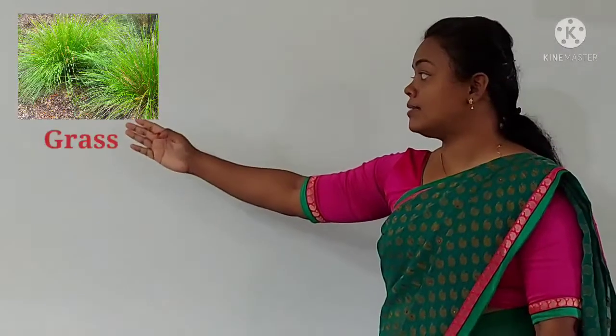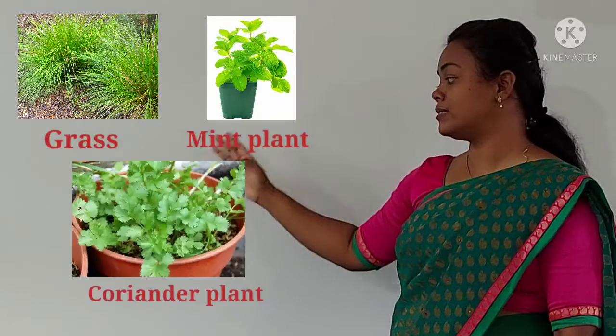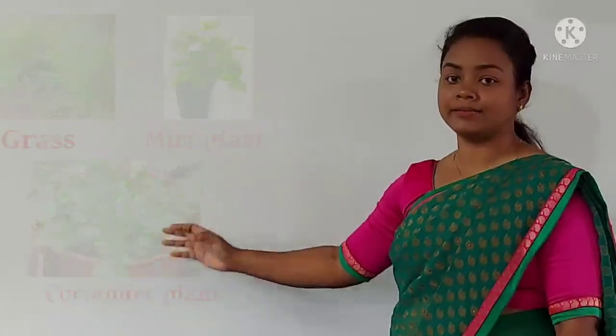And there are some plants which are very small in shape and size. For example, grass, mint plant, and coriander plant.